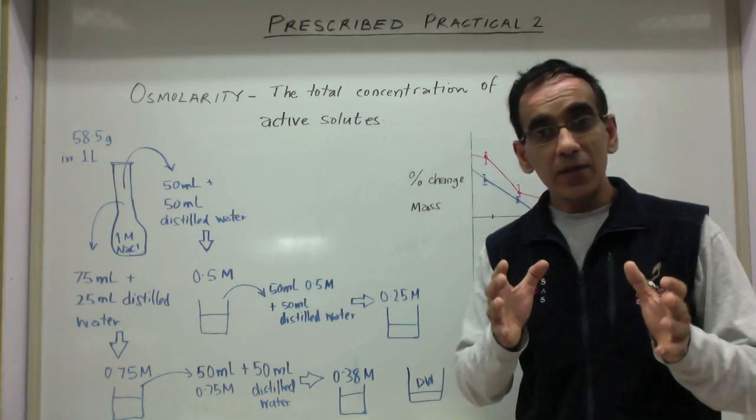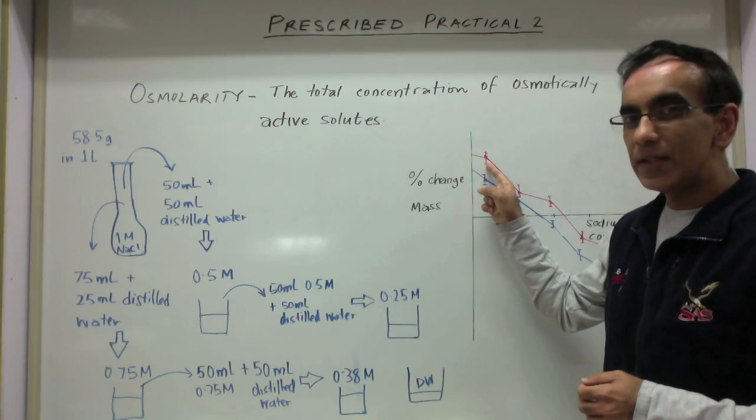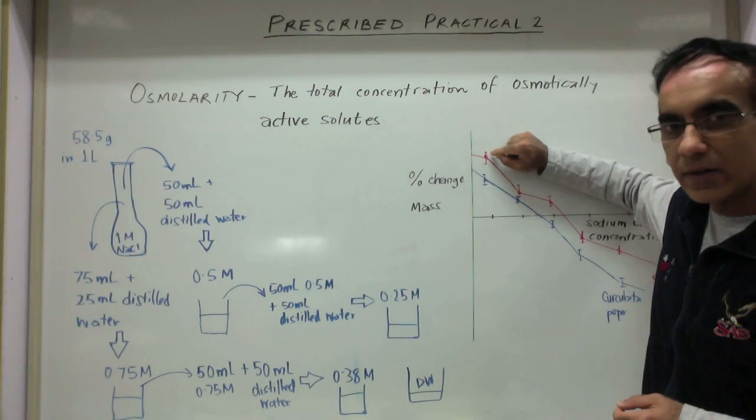And if you've done this for five trials, then you should also be able to get the standard deviation, which you would use to produce these error bars based on standard deviation.